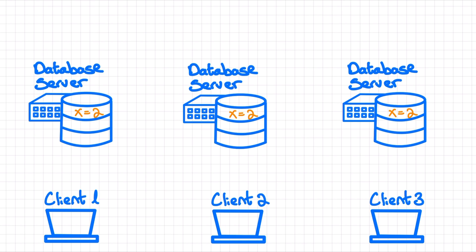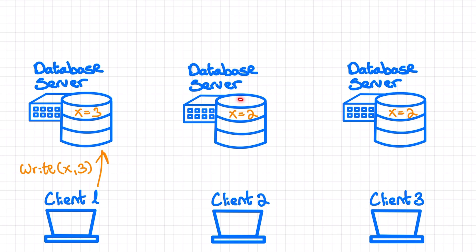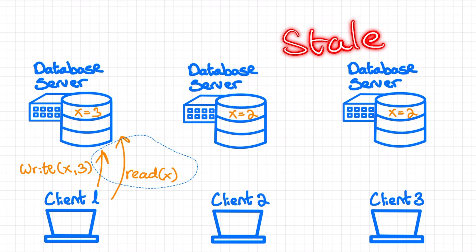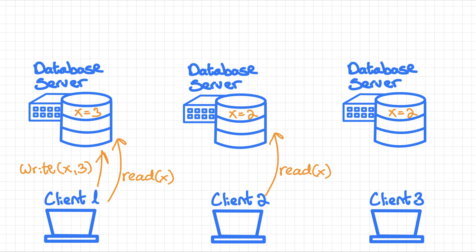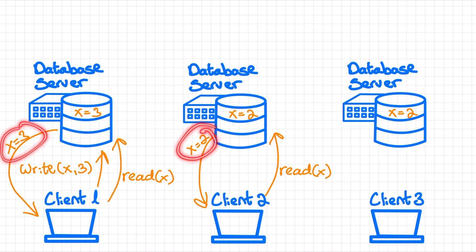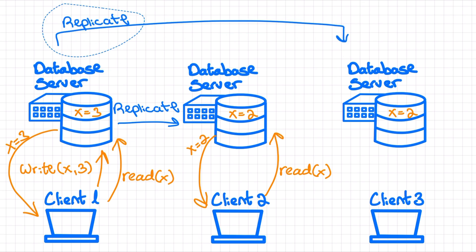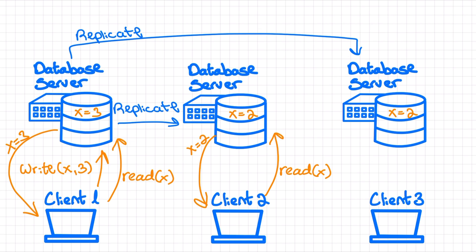If a write request on the value of x happens on this server, then this value will change and now these copies of x will no longer be up-to-date — they become stale. These subsequent requests for the value of x will be served with a different value, which is exactly what we're trying to avoid. So in order for the system to remain in a consistent state, we would need to propagate each data update to all the nodes that have a copy of it, and the way in which we propagate these updates will depend on the type of consistency that we choose to provide.